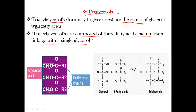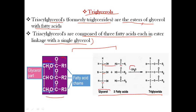Triacylglycerols are composed of three fatty acids, each in an ester linkage with a single glycerol. As shown in these figures, the glycerol part combines with fatty acid chains. Glycerol contains C1, C2, and C3 positions with three fatty acids. These two components combined release three water molecules and form triacylglycerol. The bond between glycerol and fatty acid is known as an ester bond.